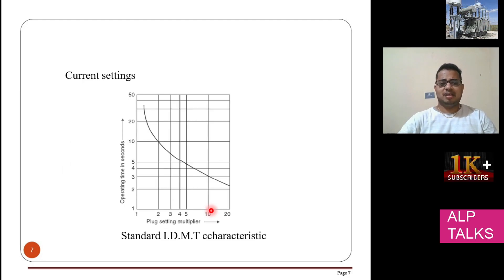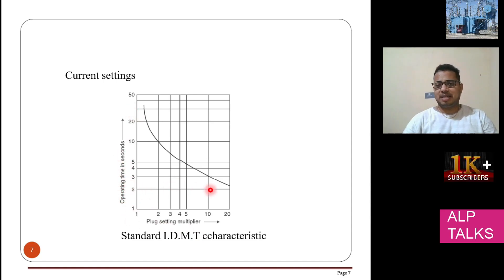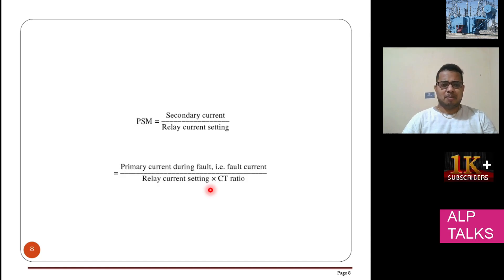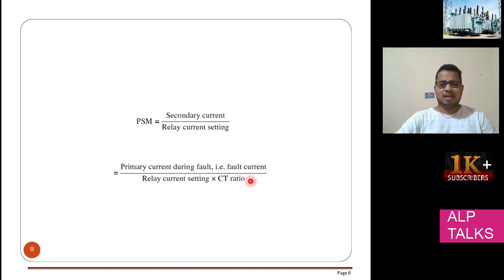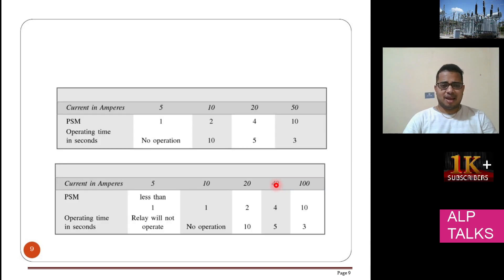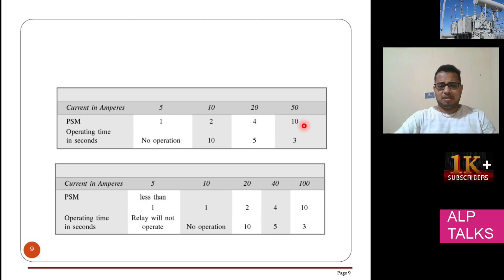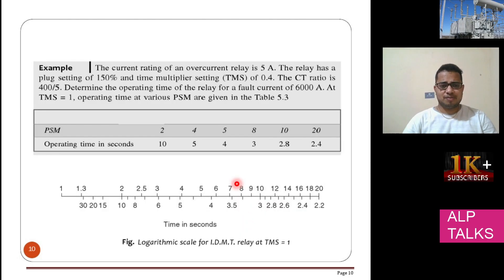There are some current settings — parameters like Plug Setting Multiplier (PSM). The operating time is on the y-axis. In the relay, we have to set the PSM for proper operation. The secondary current divided by the relay current setting gives the PSM. You can set current values such as 5 amp, 10 amp, 20 amp, 50 amp, with different PSM options available. From the graph or table you can see when the relay will operate.